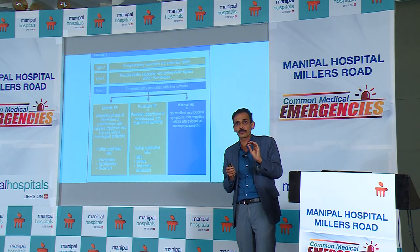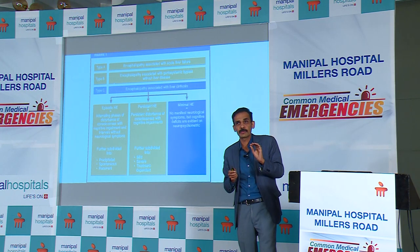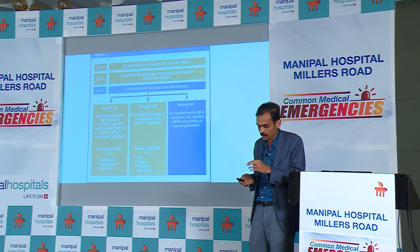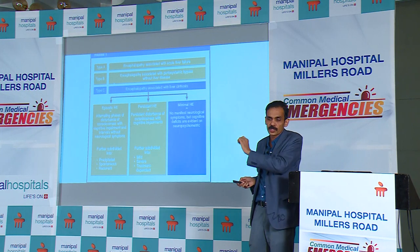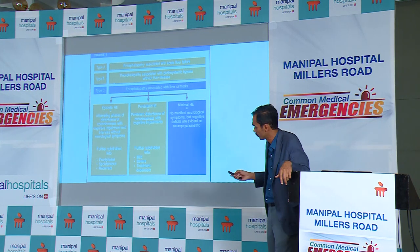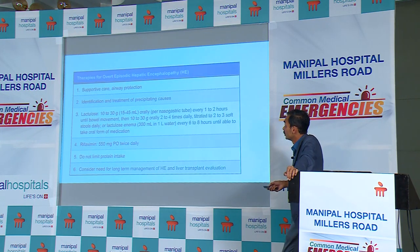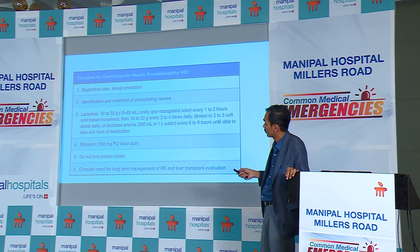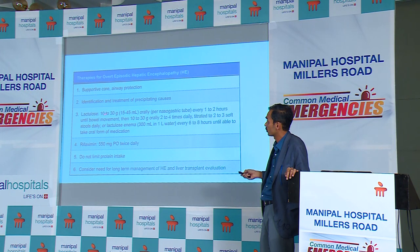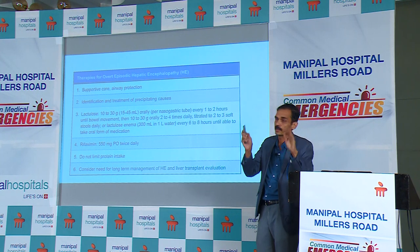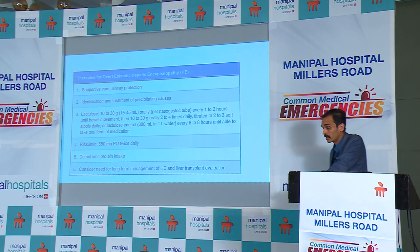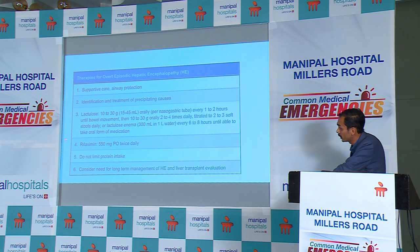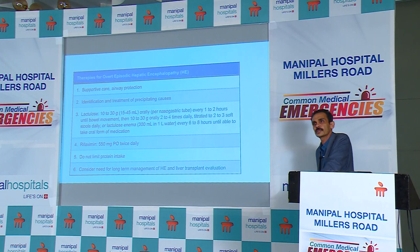In underlying liver disease, you should be very careful in giving opioid medications. When patients present with altered sensorium, look for these precipitating factors and try to rule them out. The therapies: most importantly, correct the precipitating factor, supportive care, airway protection, treatment of precipitating cause. Lactulose is the gold standard as of today.